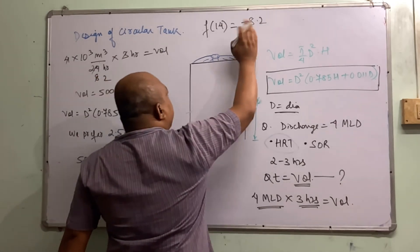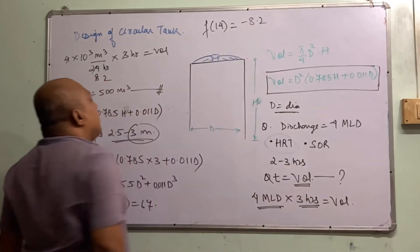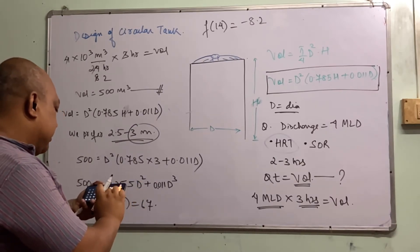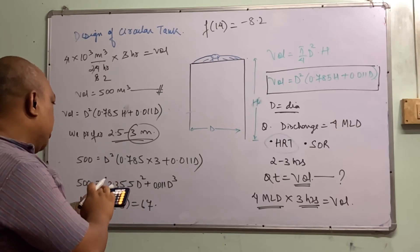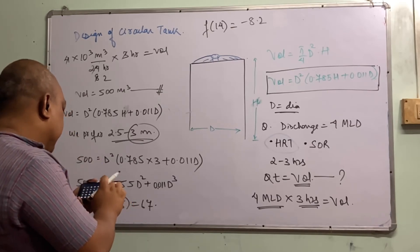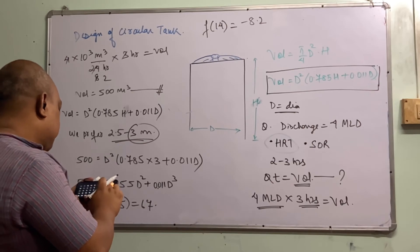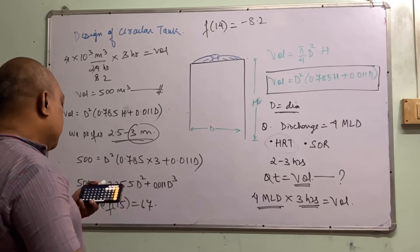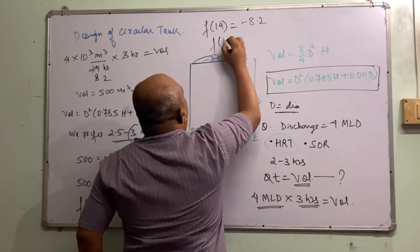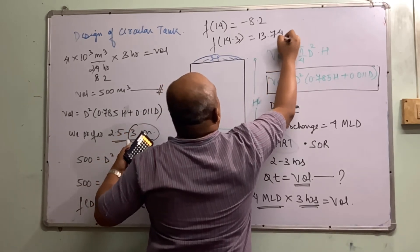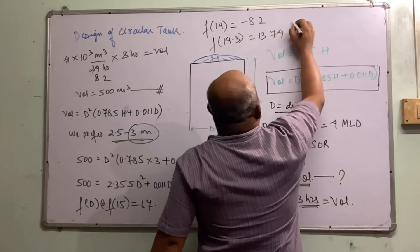F(14) comes out to approximately 0.82 less than 500, so the value may be around 14.2 or 14.3. Let's try D = 14.3: F(14.3) = 0.011 × 14.3³ + 2.355 × 14.3² − 500 ≈ 13.74. So the diameter lies between 14 and 14.3.